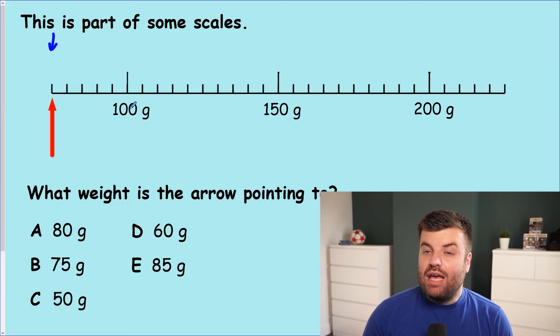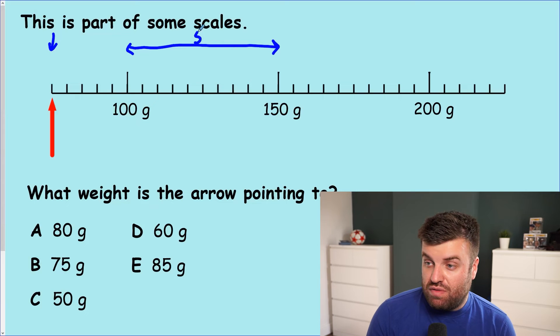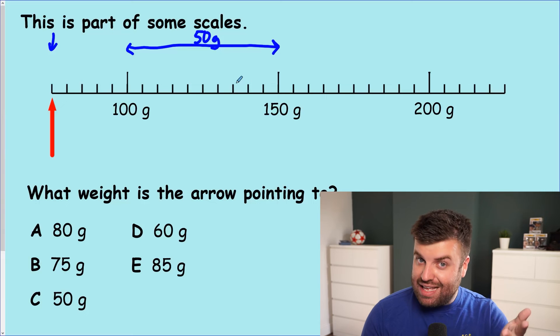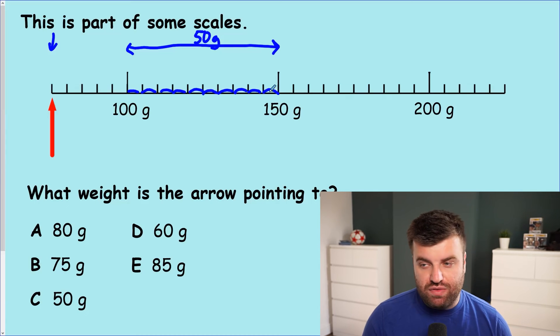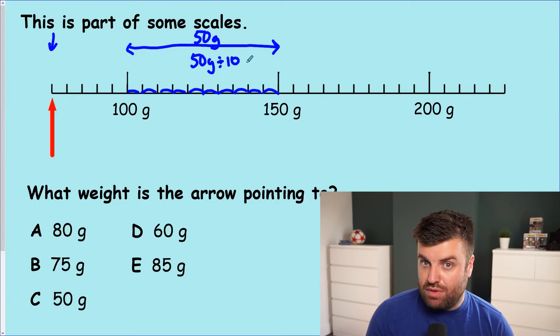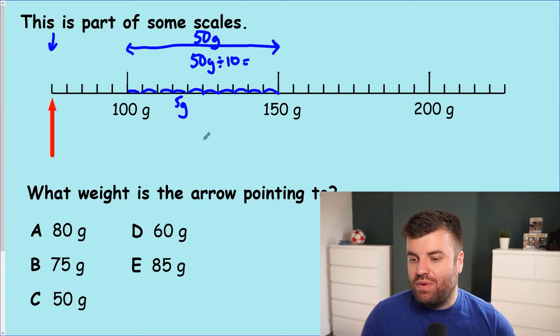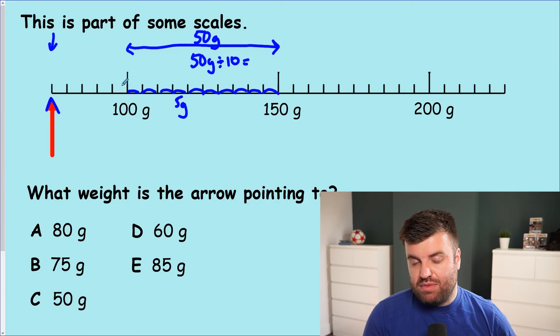So let's take a look. Step one, what was it? Can you remember? It was to find the difference between two values. So we're going to use 100 and 150. The difference between 100 and 150 is 50 grams. Now we're going to do step two, which was, do you remember? Yes, to divide by the number of jumps. So we have one, two, three, four, five, six, seven, eight, nine, 10 jumps or 10 intervals. So we're going to have 50 grams divided by 10. This is where our times table knowledge comes in handy. That means that each jump here is worth five grams. Have we finished? No, five grams isn't even an option at the bottom. So we're going to keep going. We need to find out what this value is here that we're pointing to. So we're going to count backwards in five grams.